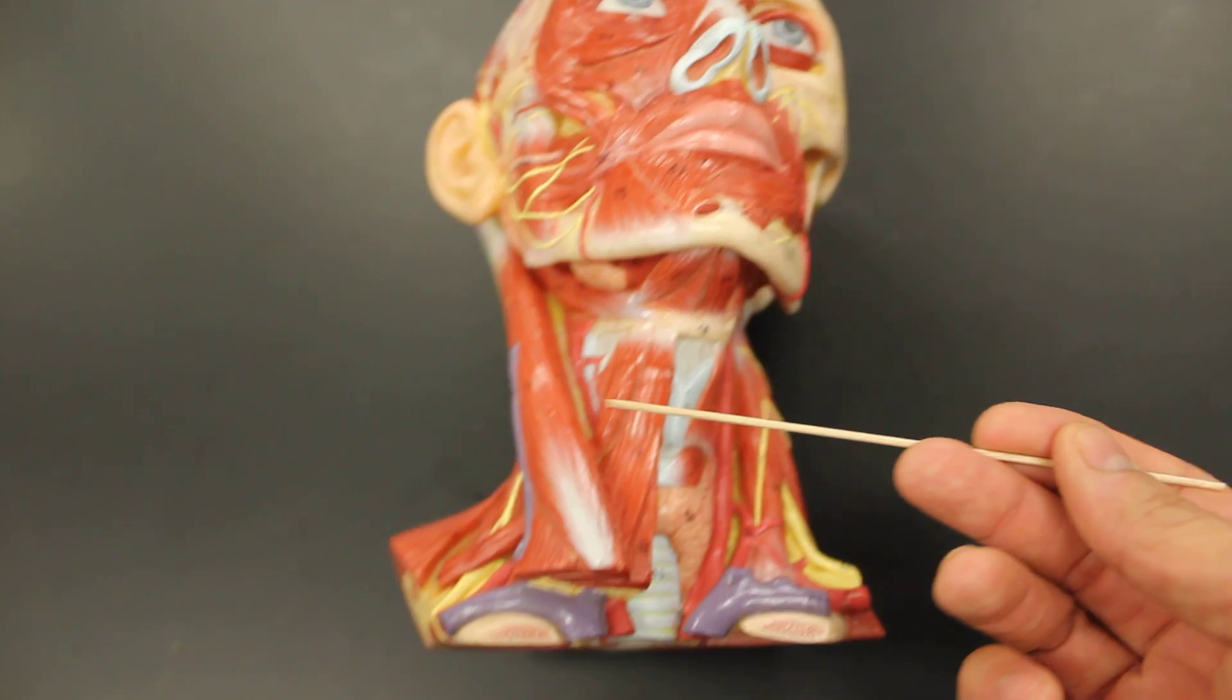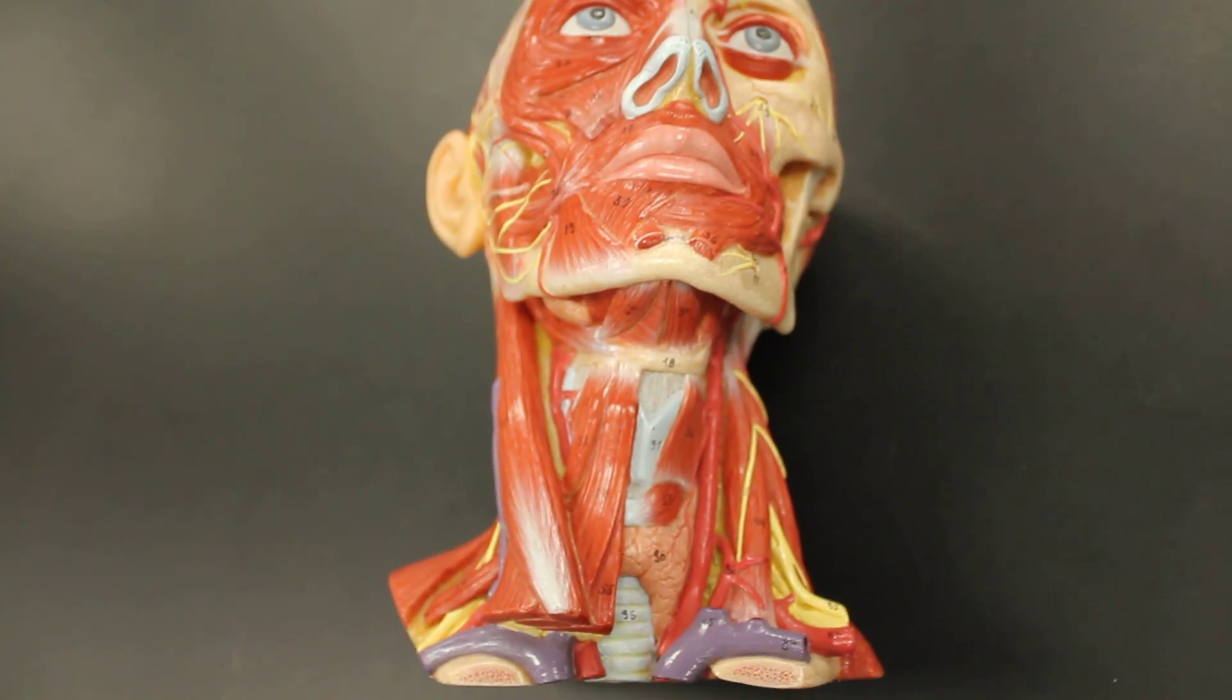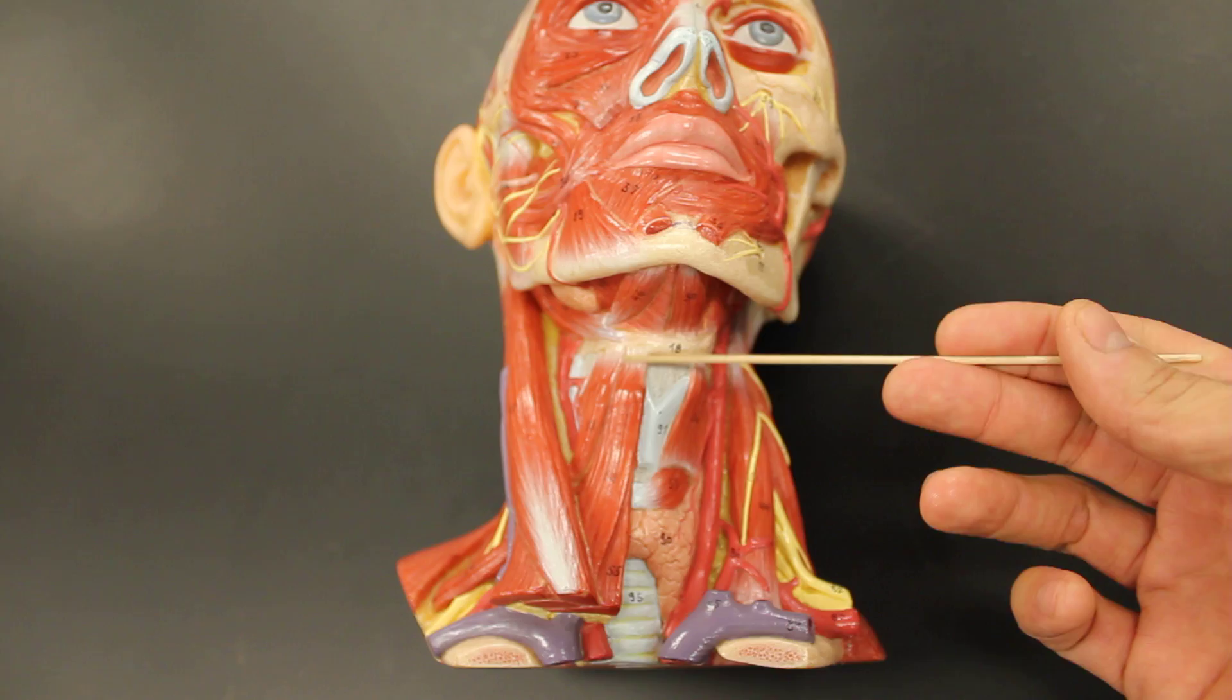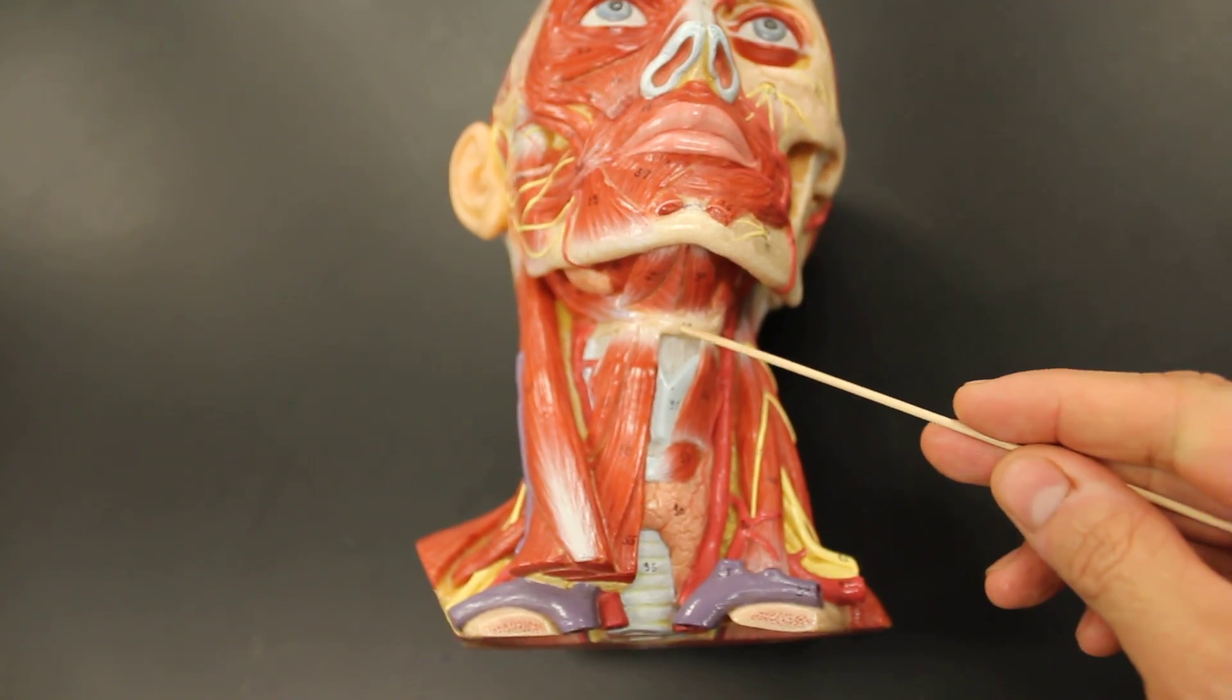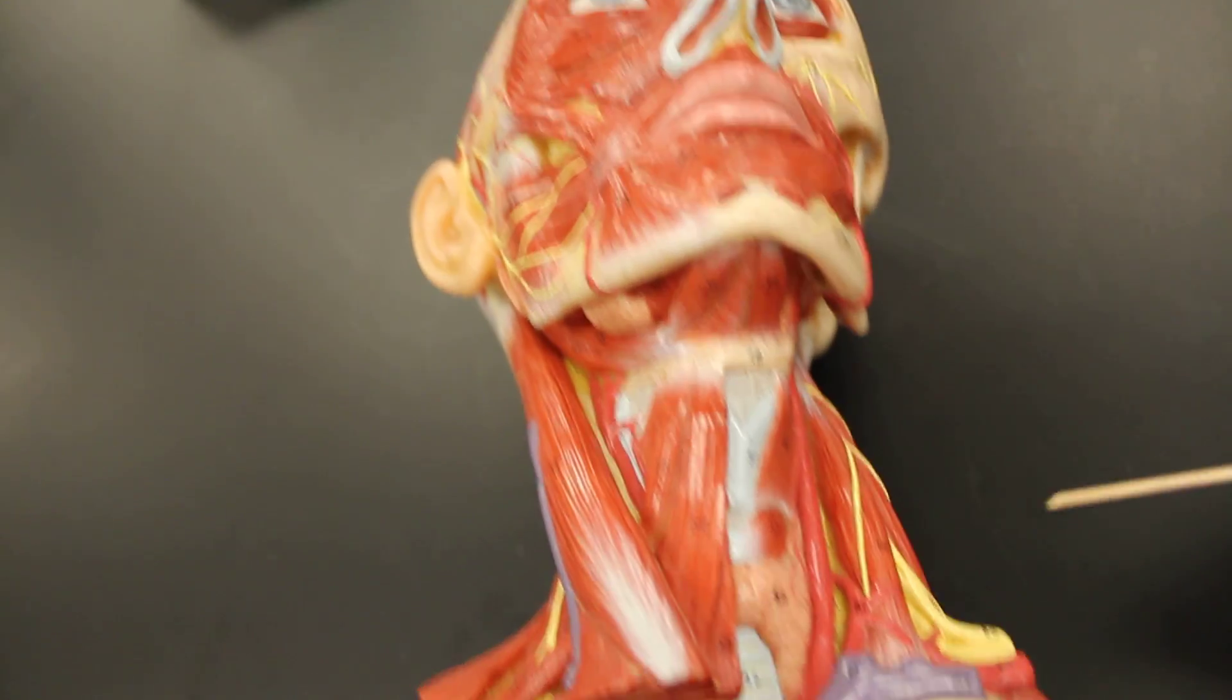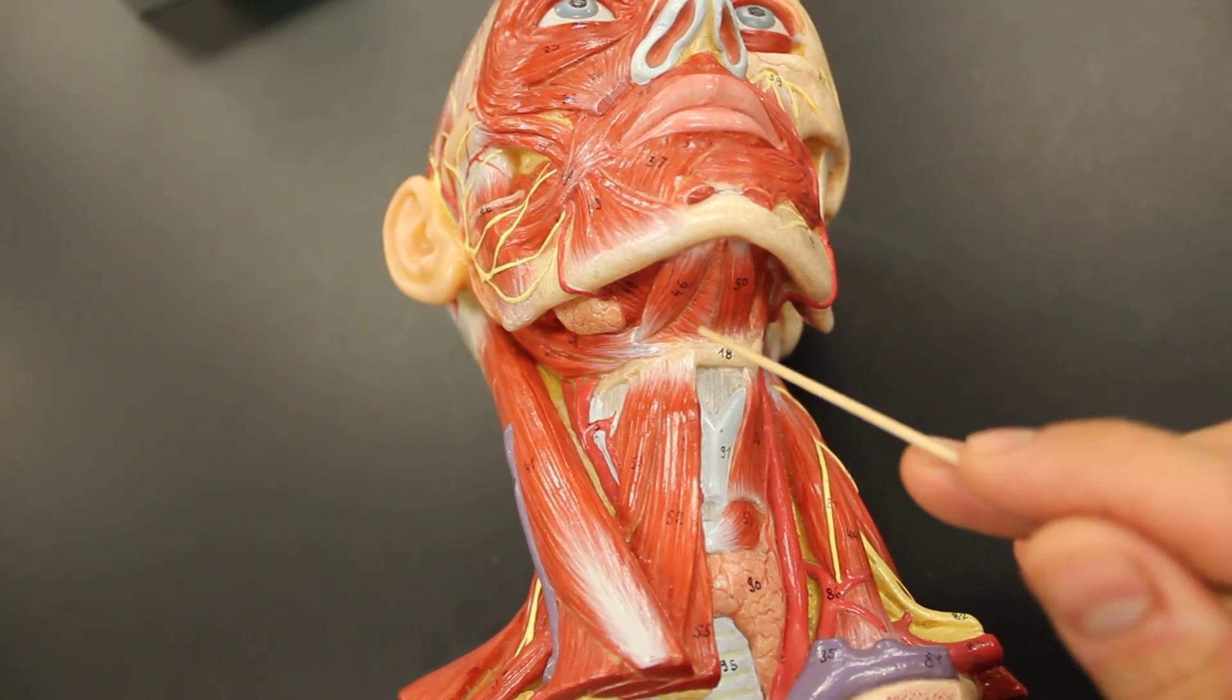Let's take a look at the anterior triangle of the neck. As I had described before, the anterior triangle of the neck is delineated into suprahyoid and infrahyoid muscles. Let's take a look at the suprahyoid muscles, four muscles all together that I want you to know. First one is this guy right here.